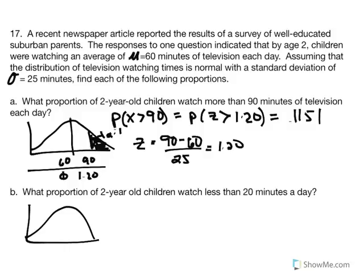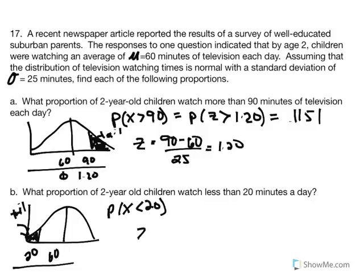Next: using the same TV-watching distribution with mean 60 minutes, what proportion of 2-year-old children watch less than 20 minutes per day? That 20 minutes is to the left, with the tail as the area of interest. We state this as the probability of X less than 20 minutes and convert to a Z score: Z equals (20 minus 60) divided by 25, giving a Z score of negative 1.6.